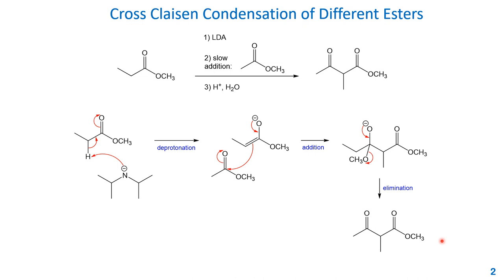This elimination produces the neutral product. I should mention that the acid workup last step is necessary because whenever you get this beta-ketoester, if you still have an alpha proton — and in this example there is still one alpha proton — the base will deprotonate it to form enolate as the final product before neutralization. So when you have the enolate, you need the last step of acidic water to protonate the enolate and get the neutral product. That is why the third step is necessary.